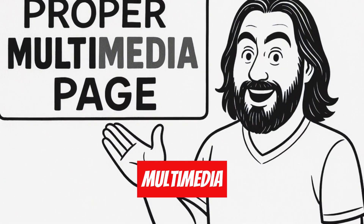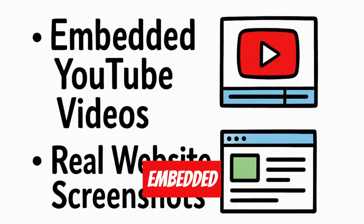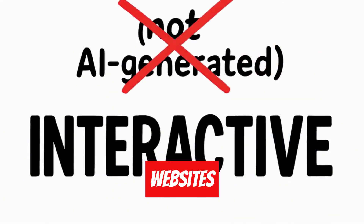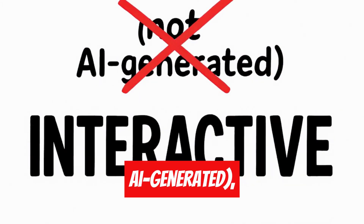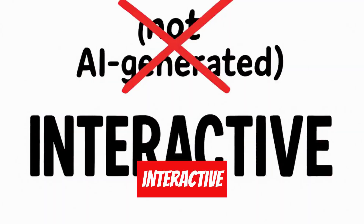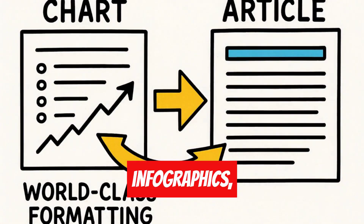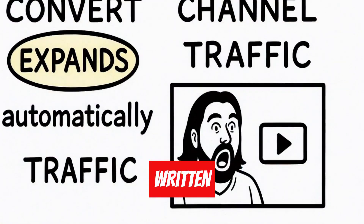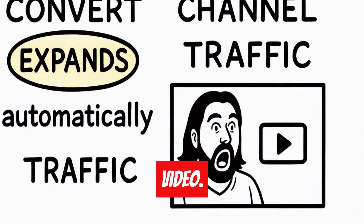Here's what a proper multimedia page includes: embedded YouTube videos, actual screenshots from websites — not AI generated — interactive infographics, world-class formatting, and comprehensive written content that expands on the video.